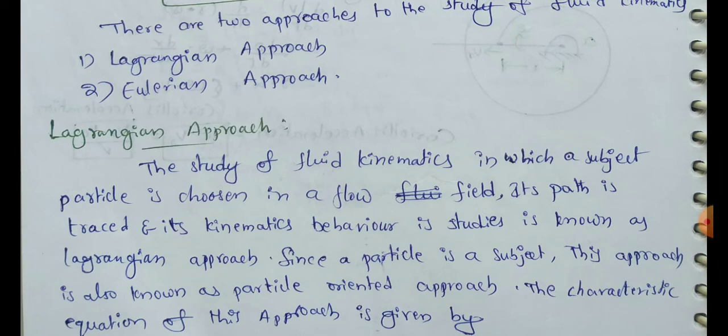In the Lagrangian method, a single fluid particle is followed by an observer during its motion, and its acceleration, velocity, density, etc. are described. This Lagrangian method follows a single fluid particle and studies its acceleration, velocity, and density.